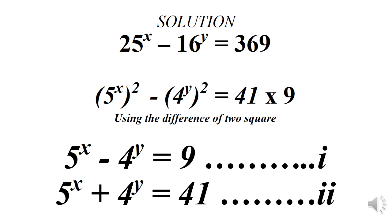Since we have a minus between the two squares, we can use the difference of two squares. That gives us two equations: equation 1 is 5 raised to power x minus 4 raised to power y equals 9 — we equate to 9 because it's the smaller factor — and equation 2 is 5 raised to power x plus 4 raised to power y equals 41, the larger factor.